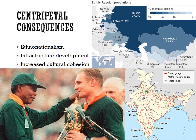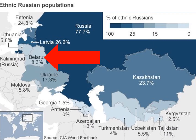Now let's look at consequences of centripetal and centrifugal forces. The pride in one's ethnicity and cultural background is known as ethno-nationalism. When a group shares a common ethnicity, religion, or language, it can bring them together. Belarus has a strong ethno-nationalist identity — despite Russia threatening Belarusian sovereignty, the pride that Belarusians have in their identity has served as a strong centripetal force for their state.